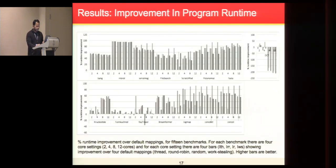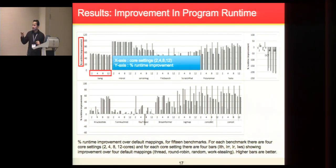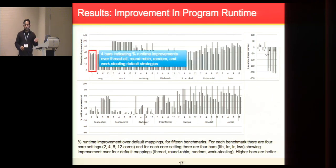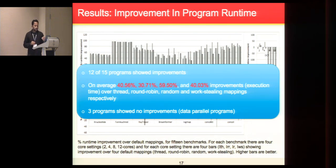Our results show considerable improvement. Here, for every program, I'm showing on the x-axis different core settings: 2, 4, 8, and 12. On the y-axis, I'm showing percentage execution time improvement. For each core setting, we have four bars indicating percentage execution time improvement of our C vector based mapping against four default mapping strategies. Higher bars are better. Overall, we achieved 12 of 15 programs that showed good improvement, on average about 40 to 45 percent improvement. Three programs did not show any improvement. These are data parallel applications, in which case it's easy to map the concurrent entities and they do not fit well with the message passing system mechanisms.